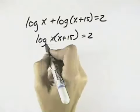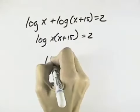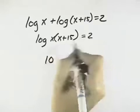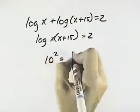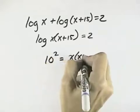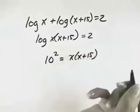Now what I have is this is log base 10, so since the base of the log is 10, the base of the exponent will also be 10. So the 2 will be the exponent from the other side of the equation, and the x times the x plus 15 will go to the other side.